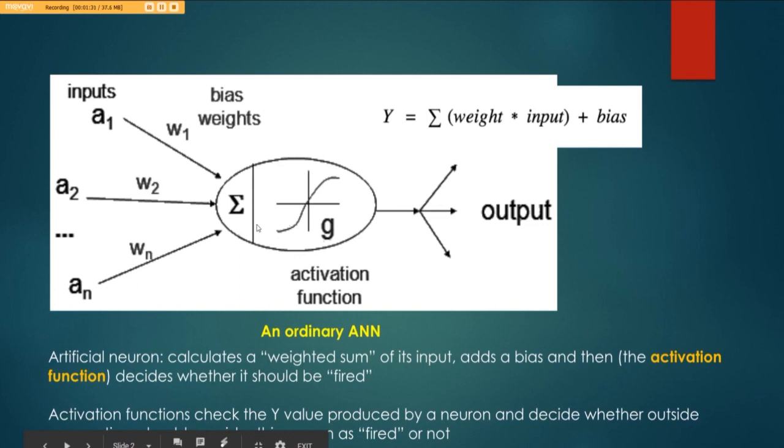All of this is done and then the activation function decides whether the artificial neuron, this oblong which has the activation function, should be fired or not. The activation functions check the y-value produced by a neuron and decide whether the outside connections should consider this neuron as fired or not, which influences the output.